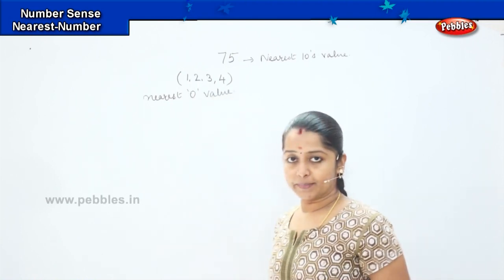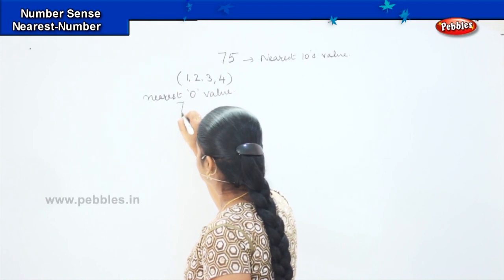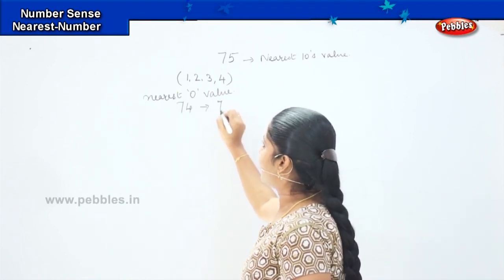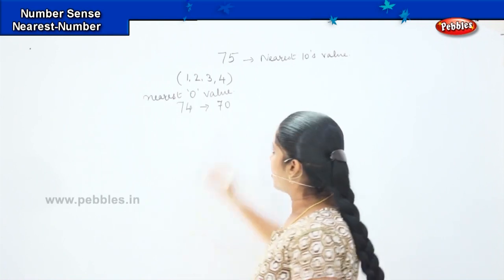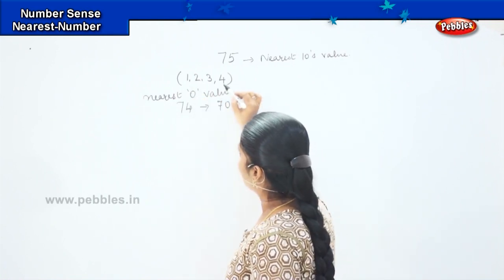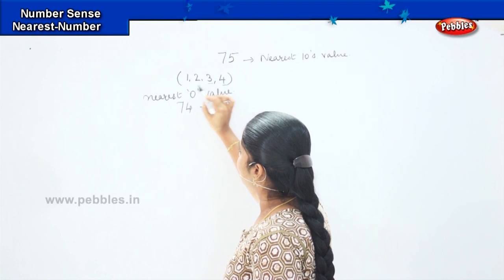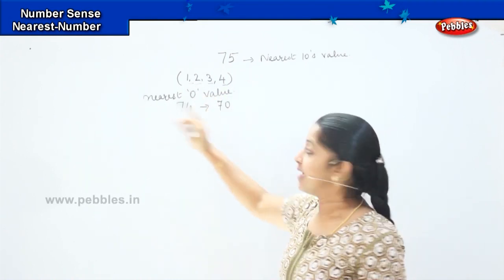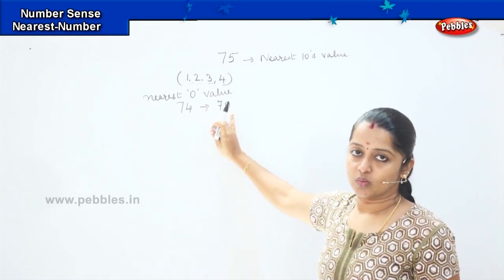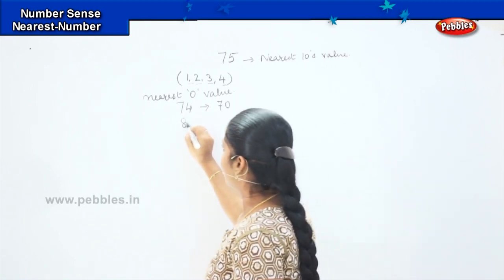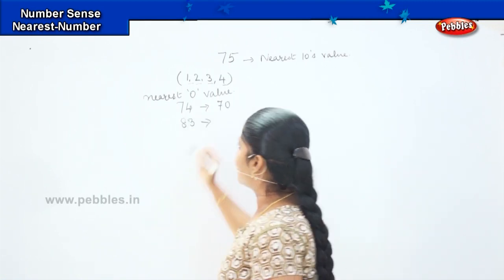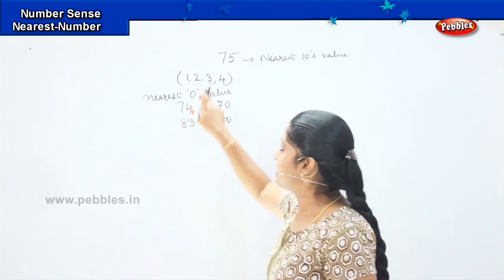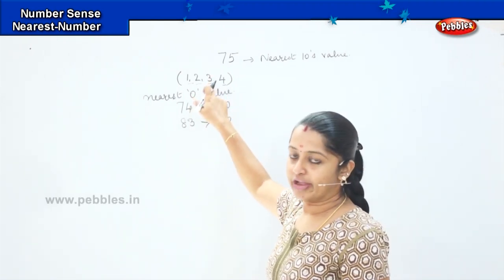For example, if I have the number 74, the nearest tens value will be 70. Why? Because when a number ends with 4, 3, 2, or 1, we shift it to the lower tens value. Similarly, for 83, the nearest tens value will be 80 because it ends with a digit less than 5.